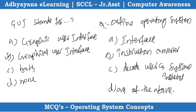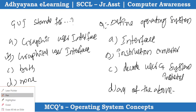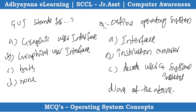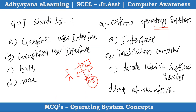The operating system acts as an interface to convert user instructions to machine instructions and machine instructions back to the user. It also decodes user and system instructions. Since all options are valid, the right answer is D — all of the above.